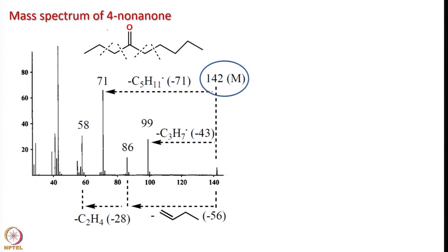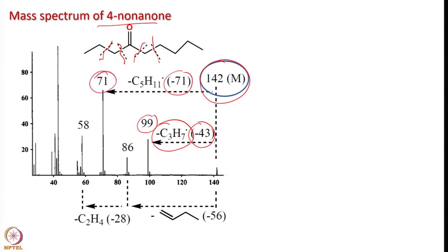Now let us look at the mass spectrum of 4-nonane. These are the possible sites of cleavage. The parent ion peak is at 142, and due to the loss of a 43 fragment — that is C3H7 — we get a peak at 99. Due to the loss of a C5H11 radical of 71 mass units, we get a peak at 71. Also, if we lose C2H4, we get 581. Work out the remaining fragment and try to identify what it corresponds to.